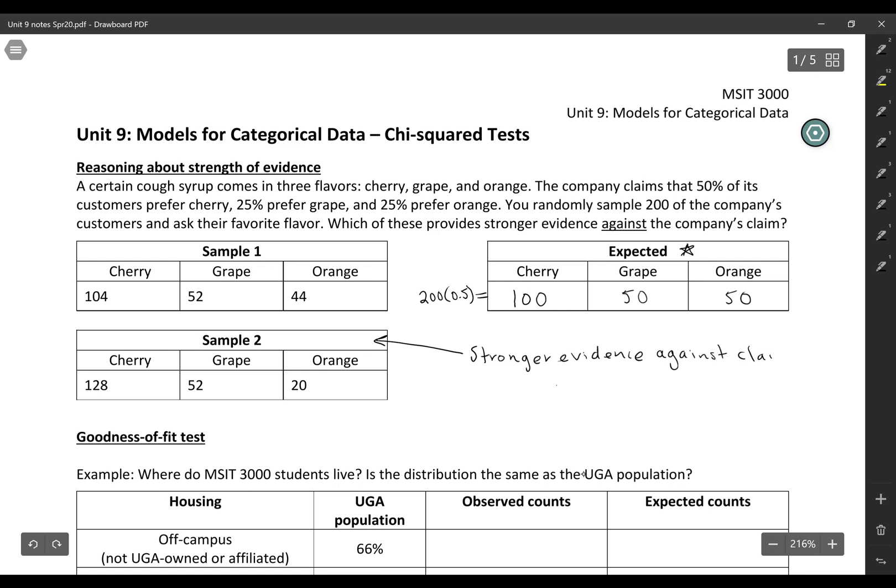And we can think about that by comparing to these expected counts, right? If we look at the counts that are in sample two, the data that are in sample two are further from the expected counts.